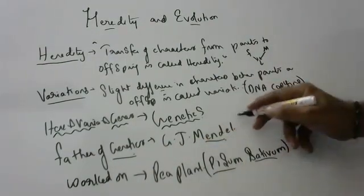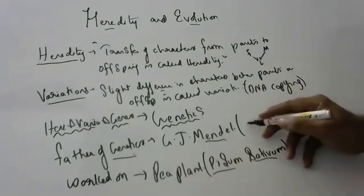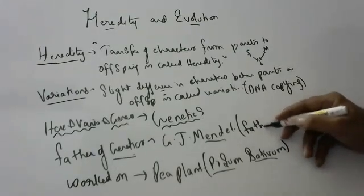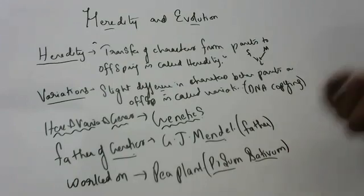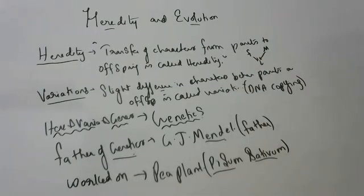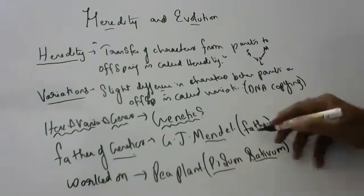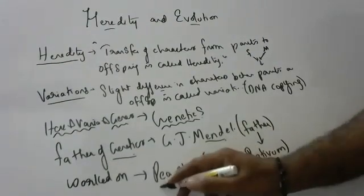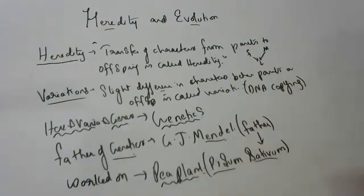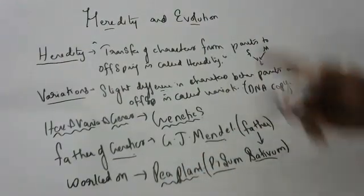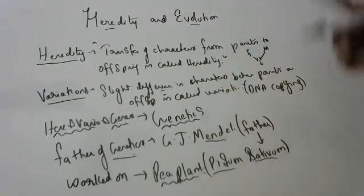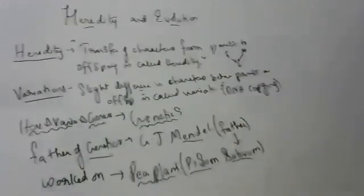The father of Genetics, Gregor Mendel, was not a scientist. He was just a Christian monk — a father in the church. But he was very much interested in genetics. So he grew a small garden in the back of the church courtyard and started working on the Pea plant. Who is the father of genetics? Mendel. And Mendel worked on which plant? The Pea plant.